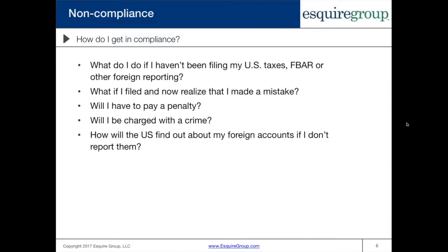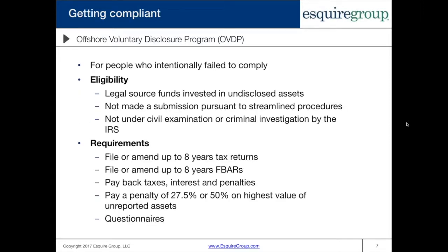Let's start talking about the variety of options — the different situations in which you may enter into an amnesty program and the different criteria we'll be discussing today. The first question is: what do you do if you haven't been filing your U.S. taxes, FBARs, or other reporting forms? What if you've been making mistakes on your returns? Are there penalties involved? Will you be charged with a crime? And how will the U.S. find out about your foreign accounts if you don't report them?